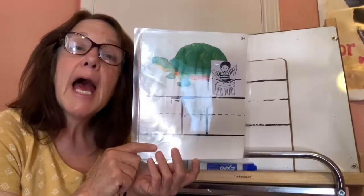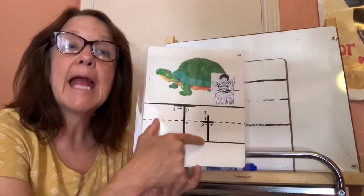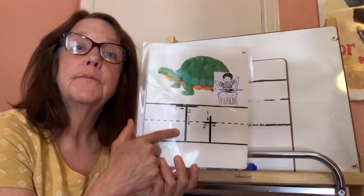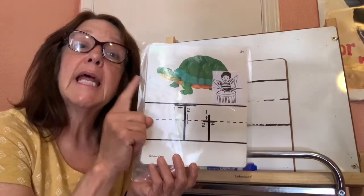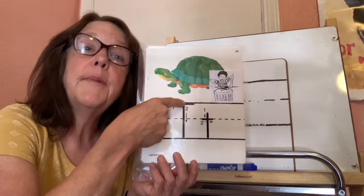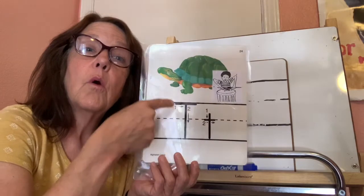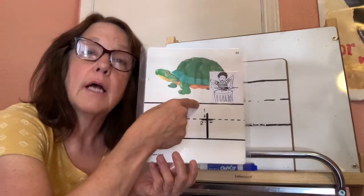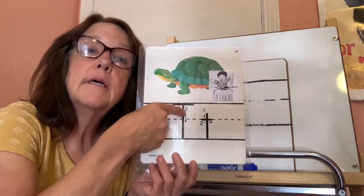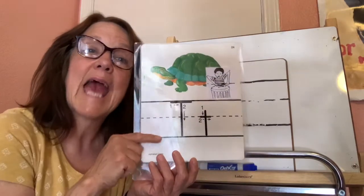Let's learn how to write the letter T — the capital and the lowercase T. Remember, the capital T is a tall letter. Get your magic finger and let's trace the capital T. Start at the top line and go straight down, then go back to the top line and across. Top, down, top, across. That's the capital T.